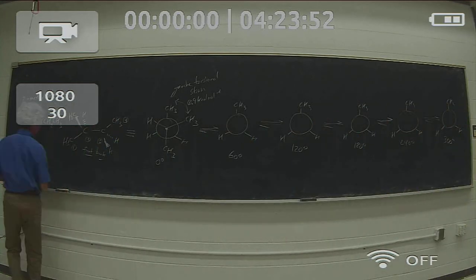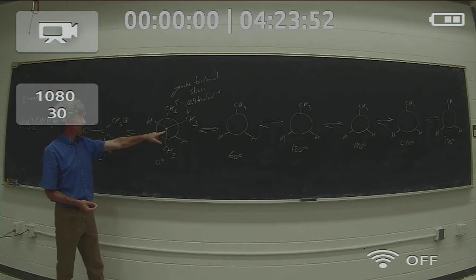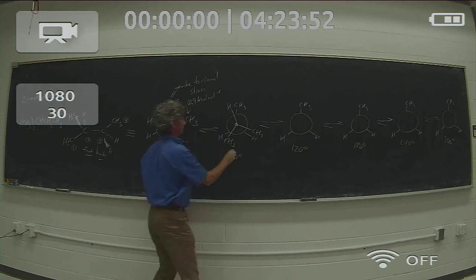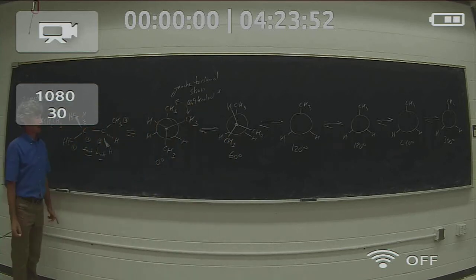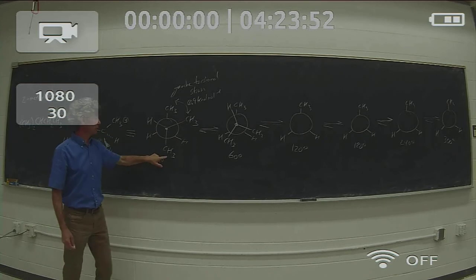Then all I have to do is start rotating my front carbon. I'll rotate it clockwise again, which will put these two methyl groups down, eclipsing hydrogens, and this hydrogen up here, eclipsing with that CH3. When I rotate it again, this CH3 will be going here. This CH3 will come down.